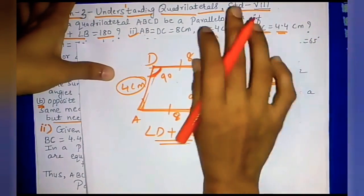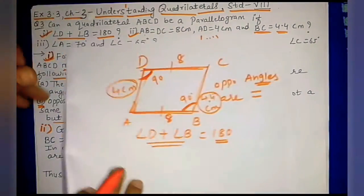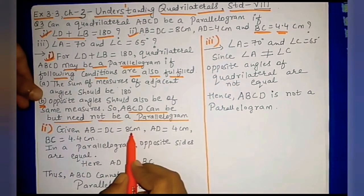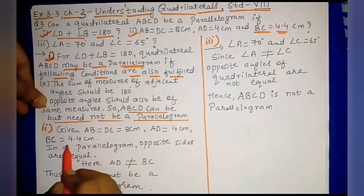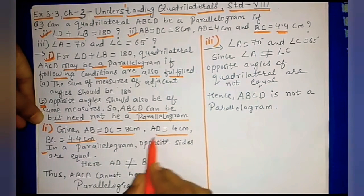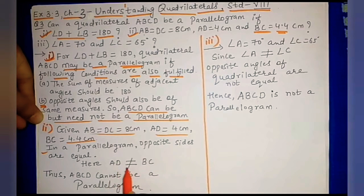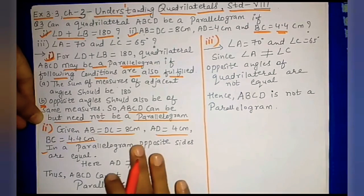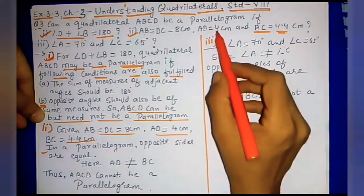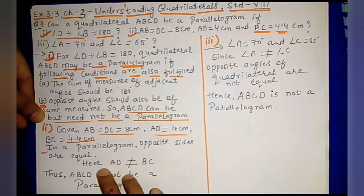So in the second condition, ABCD cannot be a parallelogram. In a parallelogram, opposite sides must be equal. But according to the given condition, AD is not equal to BC — AD = 4 cm and BC = 4.4 cm. Since opposite sides are not equal, ABCD cannot be a parallelogram.